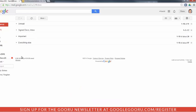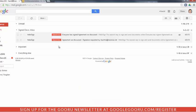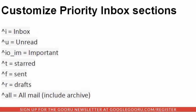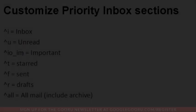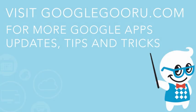And we have it all set up. Now, there are some additional options as well. I've got them spelled out here. You can do caret i, caret u for unread, and you have a little bit more in-depth options for important, starred, etc. I hope this was very useful and helps you get the most out of your Priority Inbox. Have a great day. Thank you.